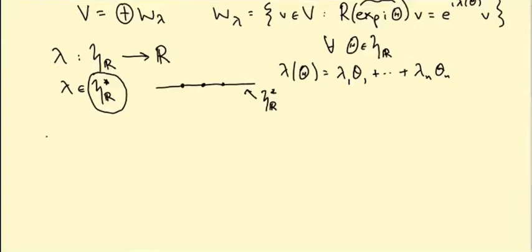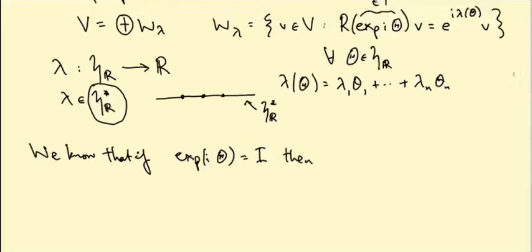So what were these dots really? What is this lattice of dots here in terms of the algebra and the Lie group? Well, we know that if X^{i*theta} equals the identity, then certainly R of X^{i*theta} has to act as the identity, so e^{i*lambda(theta)} has to be one.